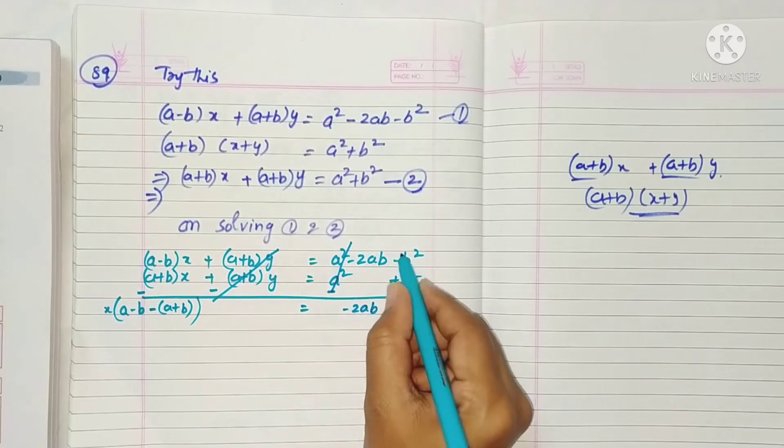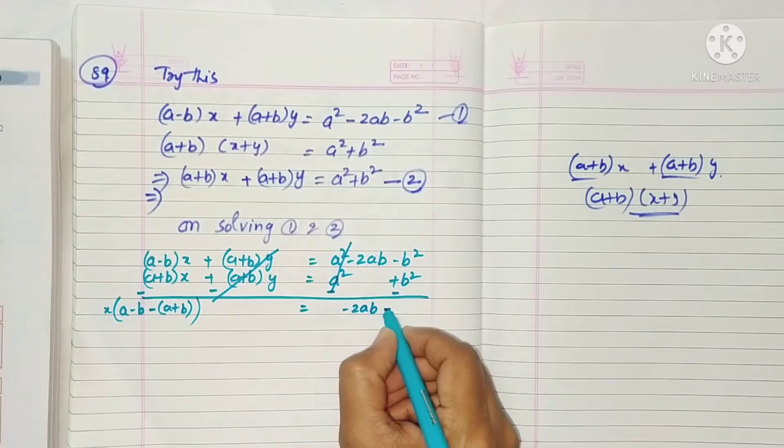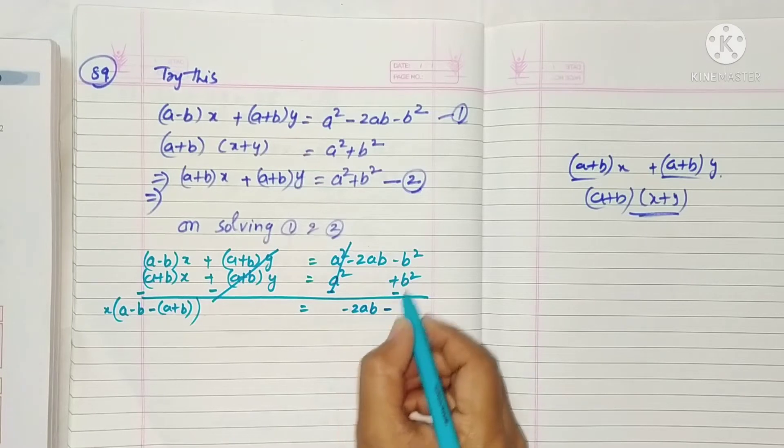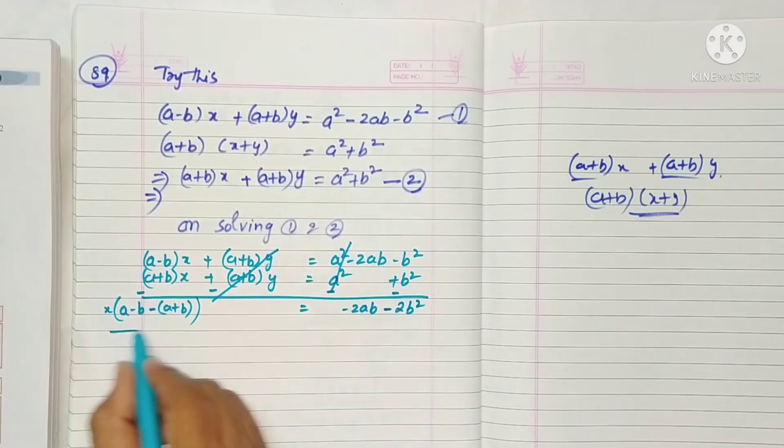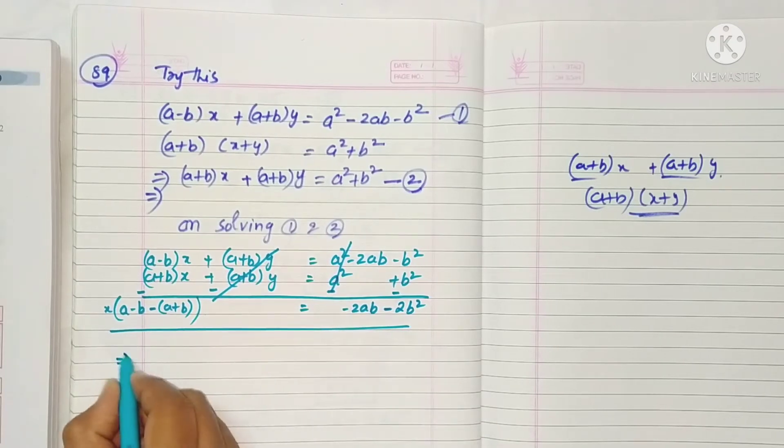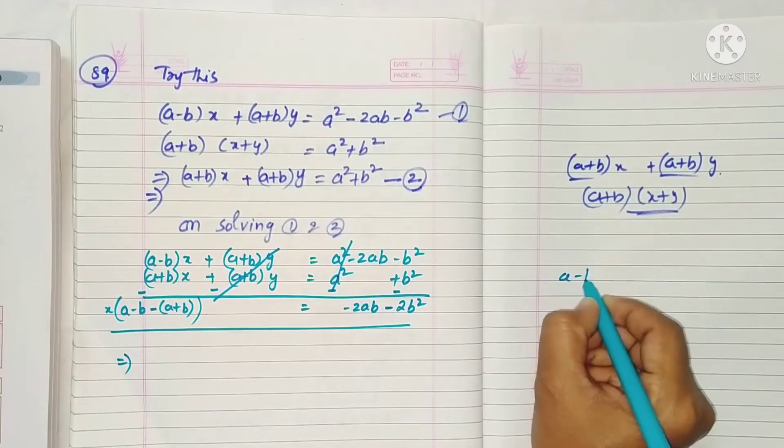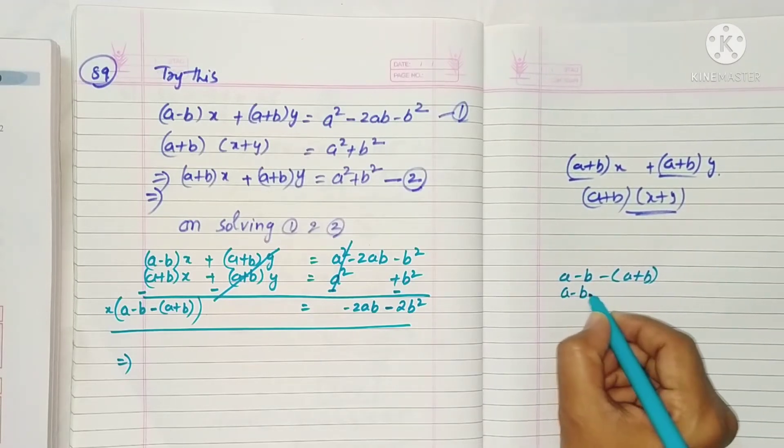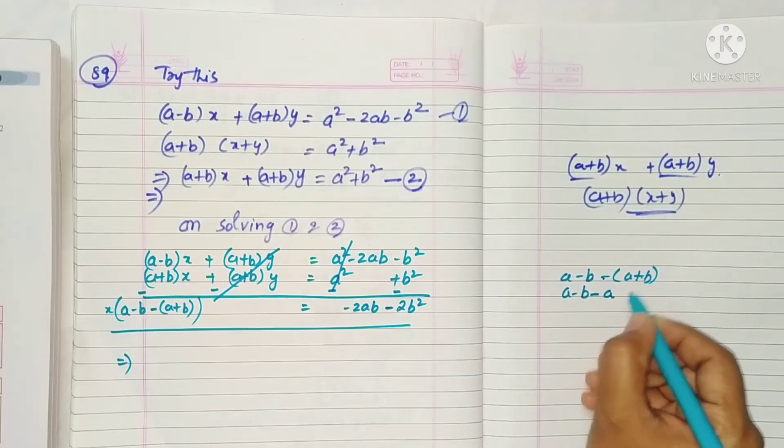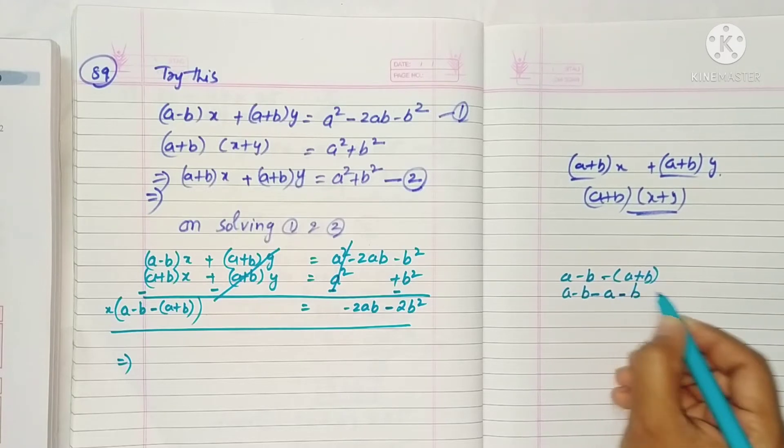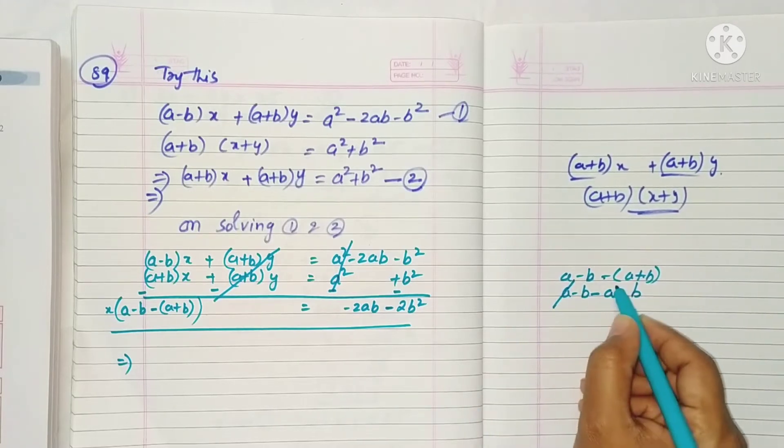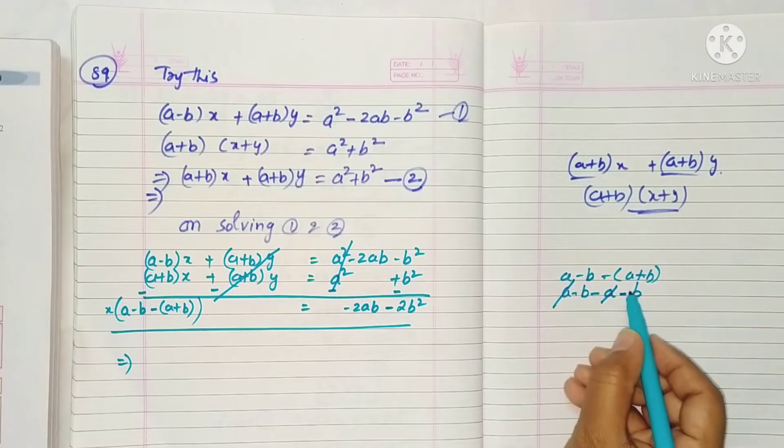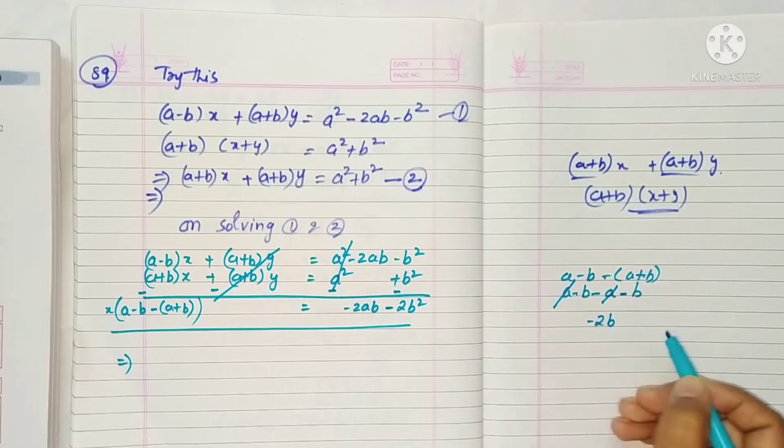Actually we will get zero here. Okay, the sign becomes this. b² plus b² gives 2b², okay? Now see here, (a-b) minus of (a+b), so first (a-b) minus a, minus times plus is minus, minus b, plus a minus a will cancel, minus b minus b gives minus 2b.